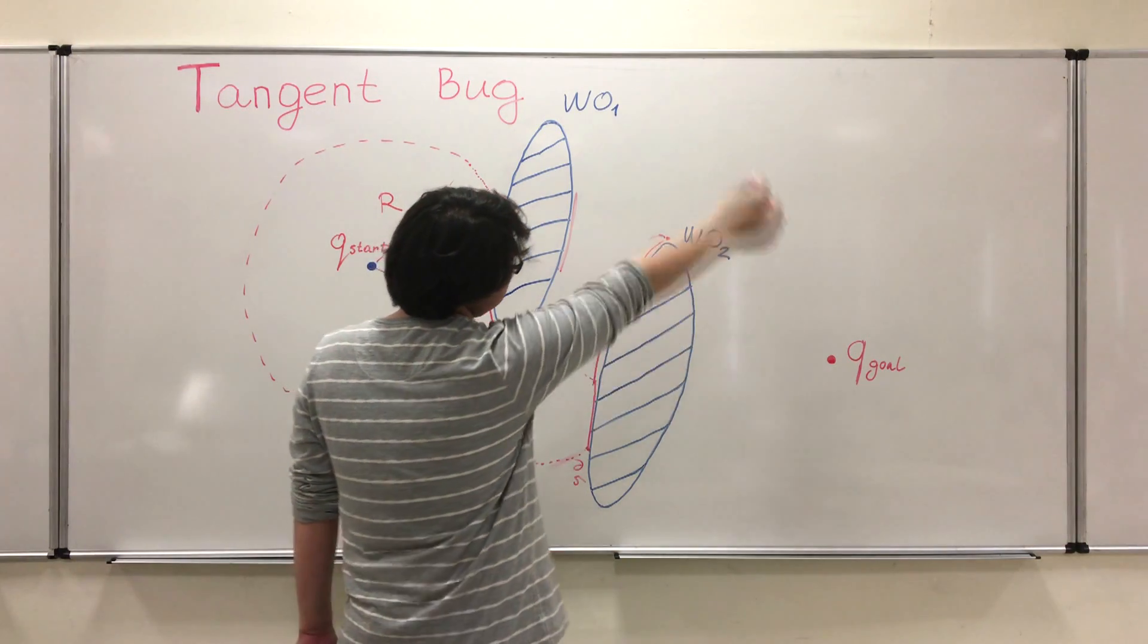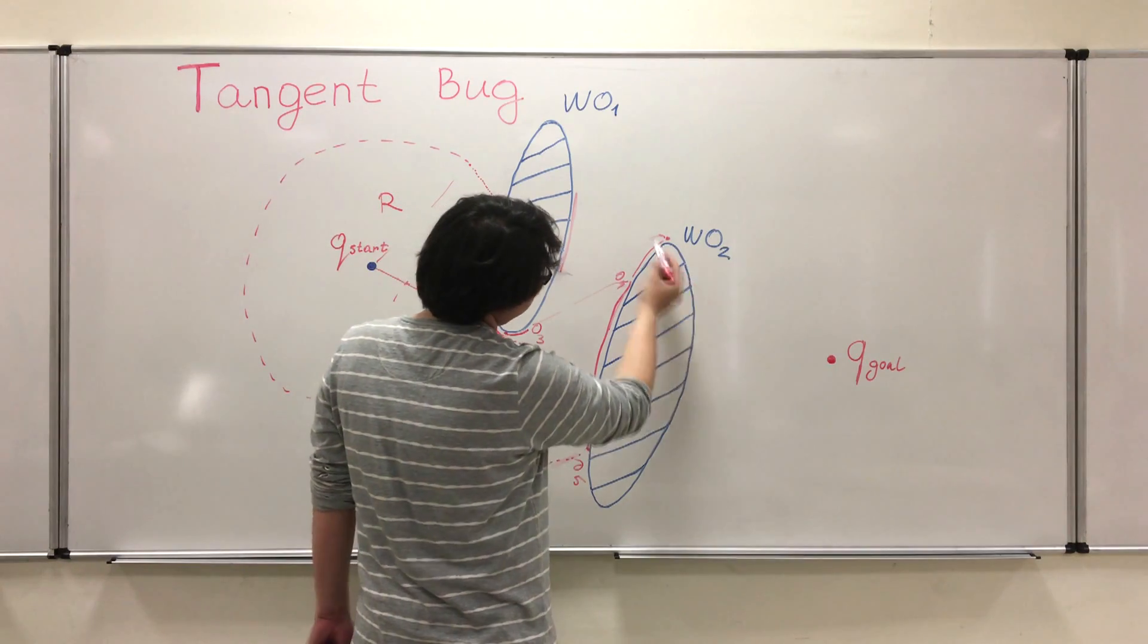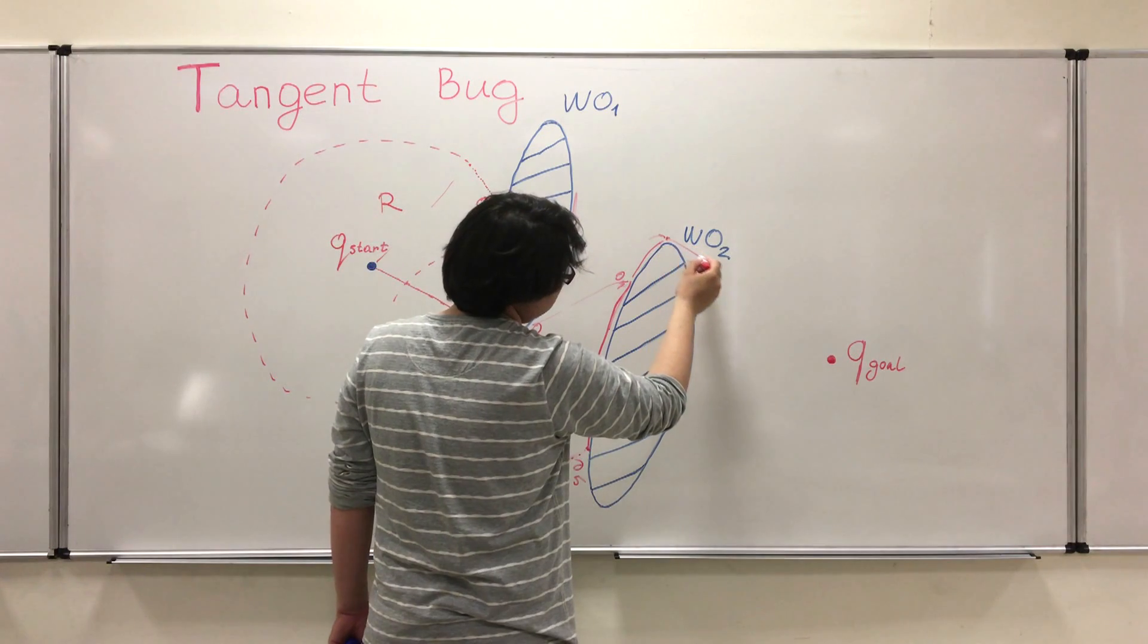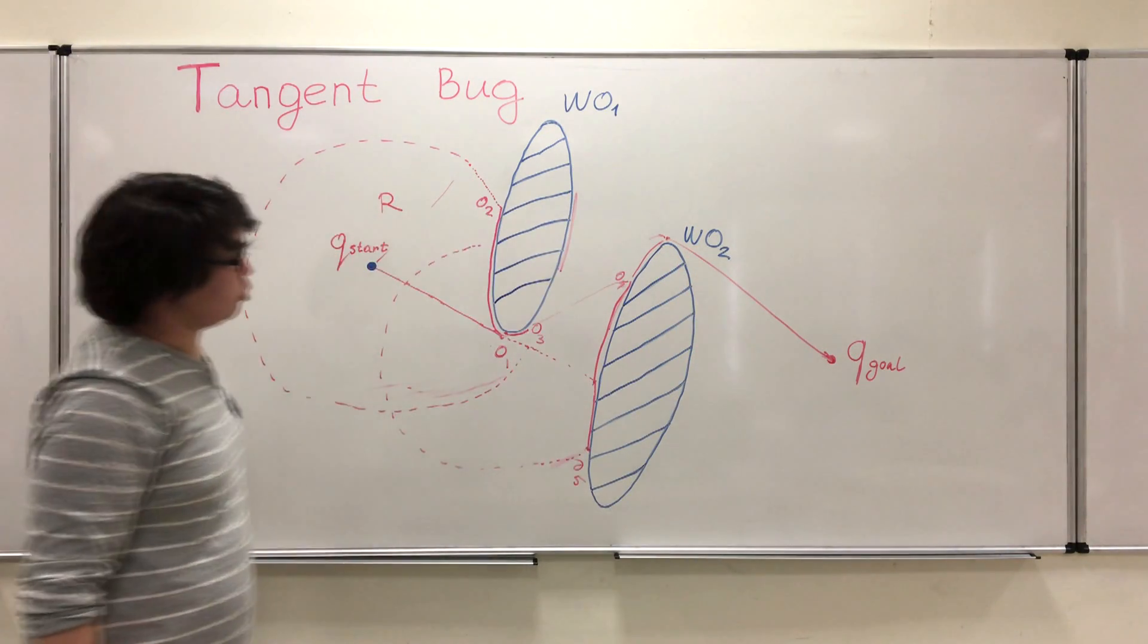After that we scan it one more time. And then we see that there is no obstacle here. And we just go towards the goal. And we hit the goal point.